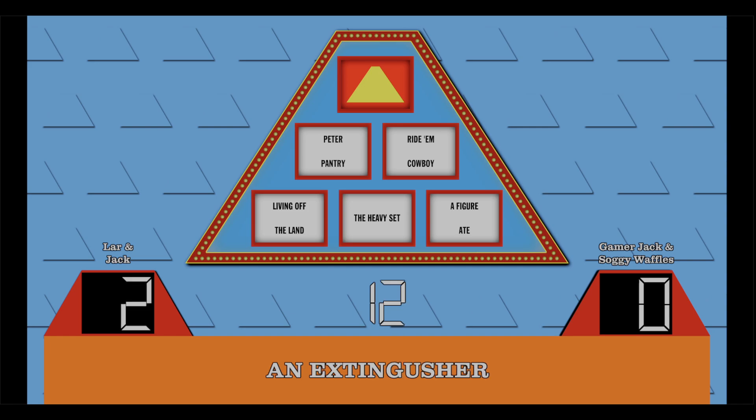I heard it. There's a fire. We need to use this to get it out. An axe. Fire hose. No. Extinguisher. Fire extinguisher. Oh, fire extinguisher. It's okay. You guys got two. Gamer Jack. Soggy, who's going first? Soggy, you go first this time. Okay. Which one you want, Soggy?